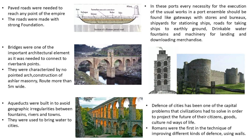Paved roads were needed to reach any point of the empire and were made with a strong foundation. Bridges were one of the important architectural elements needed to connect riverbank points — characterized by no pointed arch, construction of ashlar masonry, and routes more than 5 meters wide. Aqueducts were built to avoid geographic irregularities between fountains, rivers and towns, used to bring water to cities. Ports had every necessity including gateways with stores, roads for taking ships to dry ground, drinkable water fountains, and machinery for landing and unloading merchandise. Defense of cities was one of the capital problems civilization had to solve, and Romans were first in the technique of improving different kinds of defense using walls.